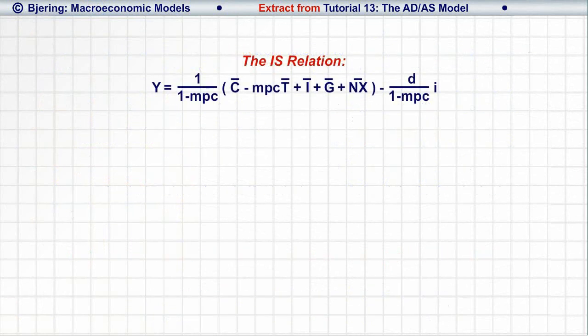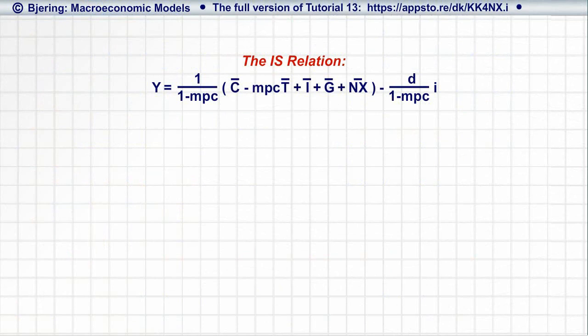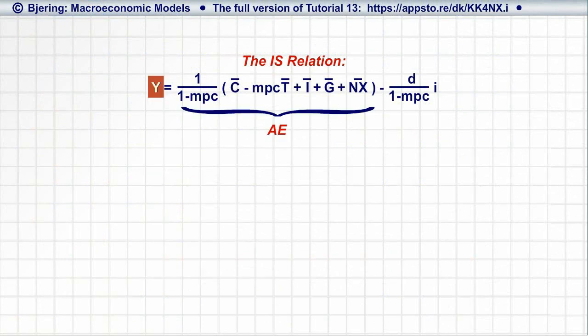Recall the IS relation from Tutorial 11. The IS relation extends the basic Keynesian model, assuming that aggregate expenditure, AE, and equilibrium Y are affected by the nominal interest rate, I, as reflected in this term.